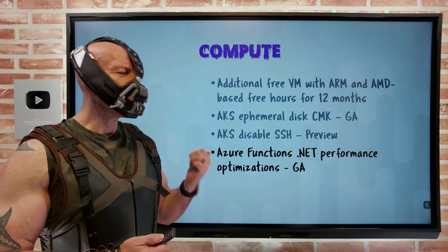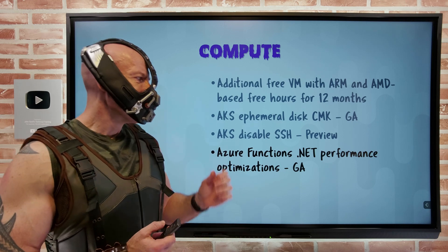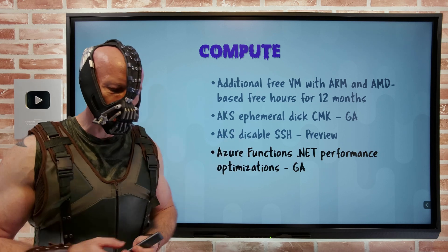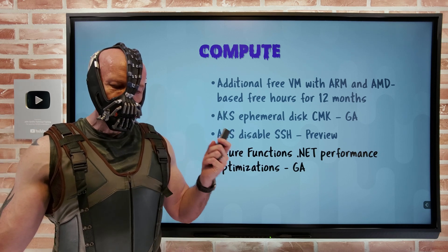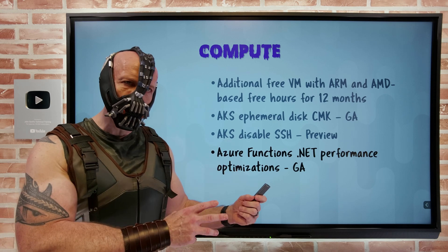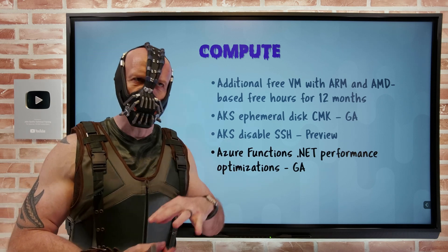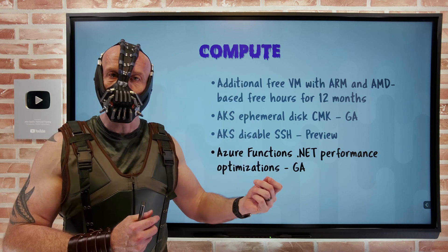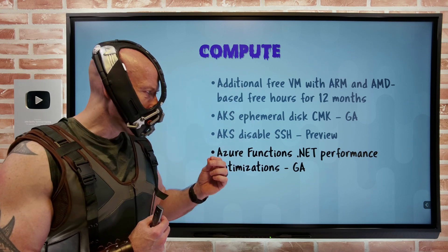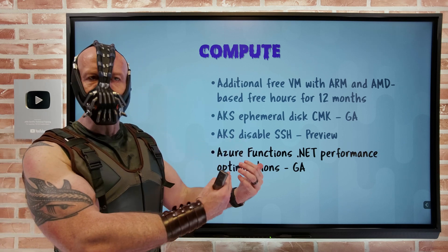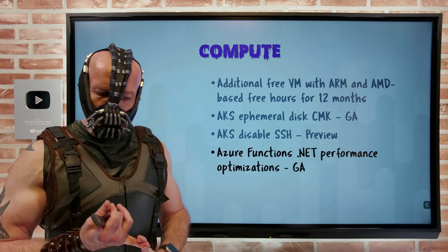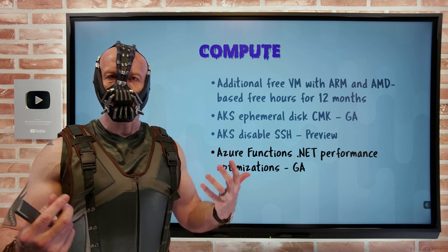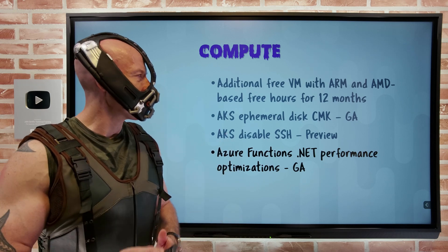Azure Functions — I've talked about this in the past. Now there are additional .NET performance optimizations that have gone GA. This is where I'm using that isolated worker model, where it can run a different version from that of the host. I do have to upgrade to the latest versions of the core dependencies, but now there are improvements especially around that cold start, such as placeholders and optimized executor, to improve the overall experience of our Azure Functions.